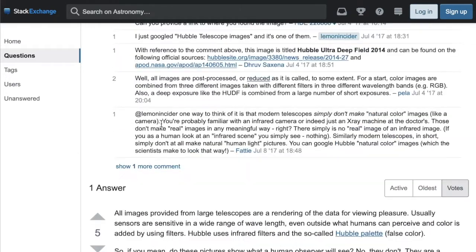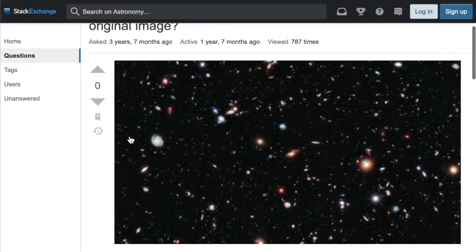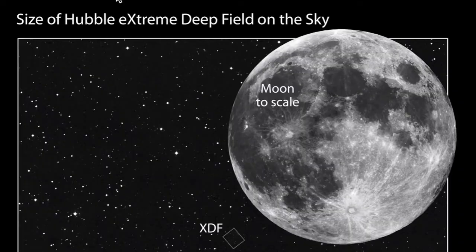Hubble uses infrared filters and the so-called Hubble palette. False color. So if you mean do these pictures show what a human observer will see? No, they don't. They're a visualization of the data collected. Now listen to this. All things observed at low light conditions are black and white as humans lose color vision at low light. So these are actually black and white photos. There is no color. They add color later. Here's some great answers here. One way to think of it. Oh, this is great. This is a knee slapper. One way to think of it is that modern telescopes simply don't take natural color images like a camera. You're probably familiar with an infrared camera or indeed just an x-ray machine at the doctors. Those don't take real images in any meaningful way, right? There simply is no real image of an infrared image. If you as a human look at an infrared scene, you simply see nothing. Similarly, modern telescopes, in short, simply don't at all make natural human light pictures. You can google Hubble natural color images, which the scientists make to look that way. The scientists, so all color is fake on these pictures.